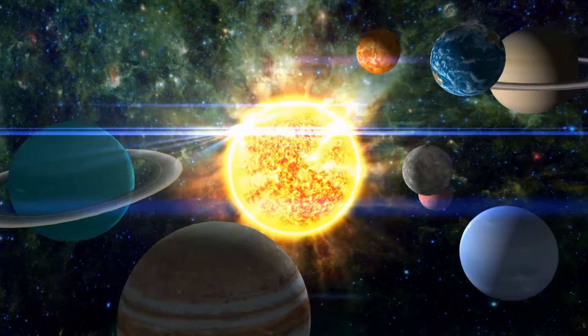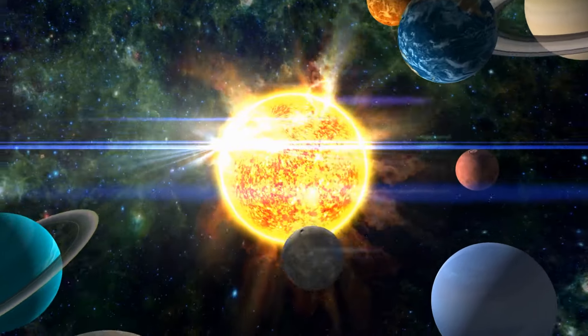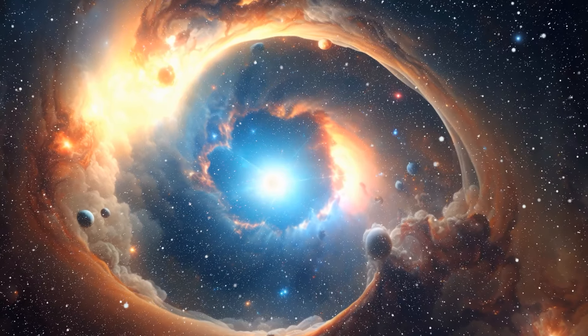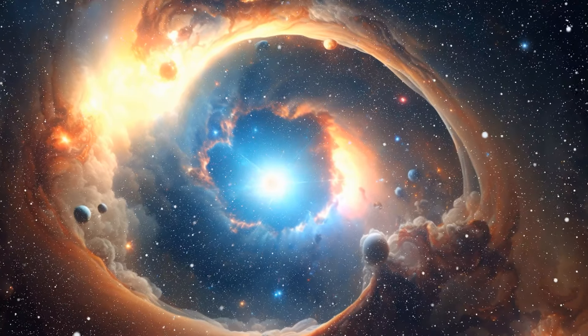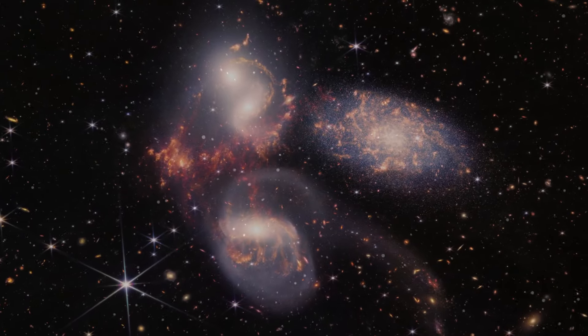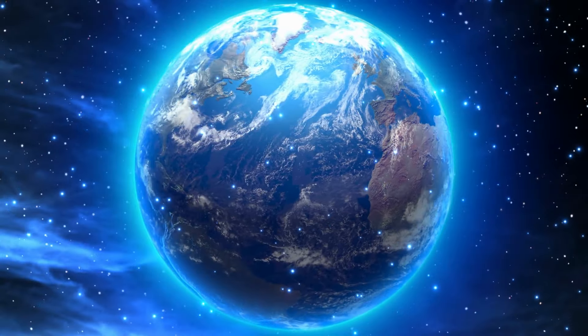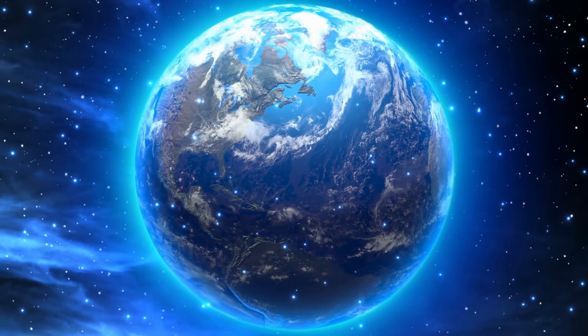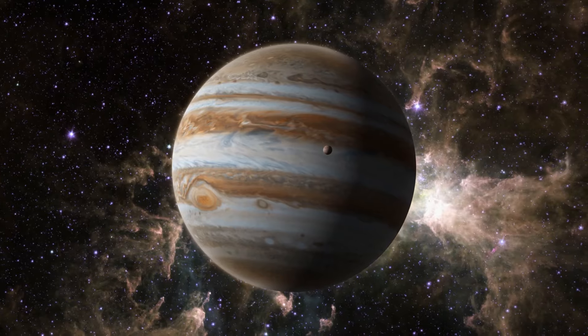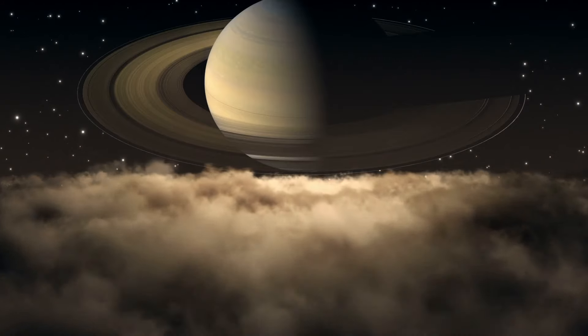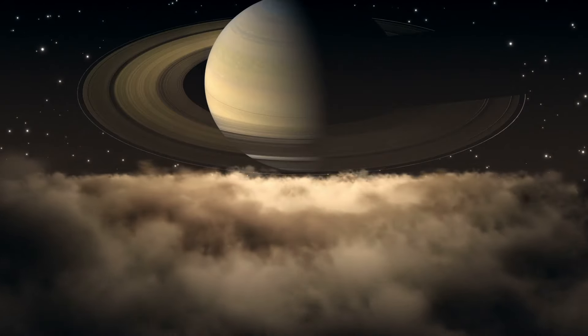Planets, moons, asteroids, and other small bodies within our solar system and other planetary systems have diverse chemical compositions reflecting their formation histories and geological processes. For example, rocky planets like Earth are primarily composed of silicate minerals and metals, while gas giants like Jupiter and Saturn are primarily composed of hydrogen and helium.